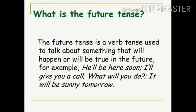For example: 'He will be here soon' — it means that he will be here. 'I will give you a call' — this is also a future tense, using 'will.' 'What will you do?' and 'It will be sunny tomorrow' — now it is talking about tomorrow, so this is also a future tense.